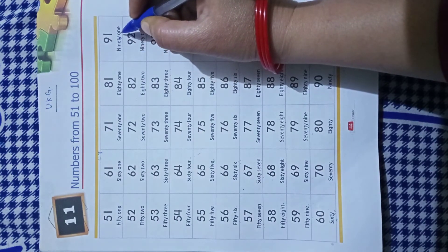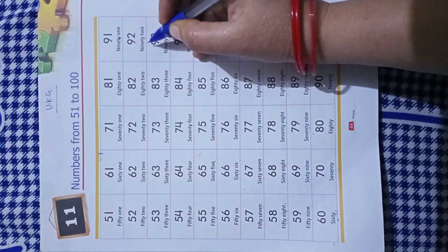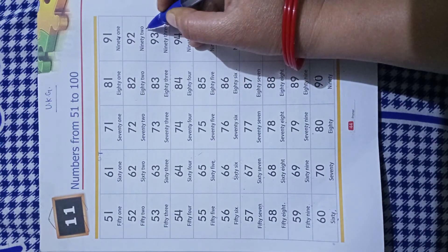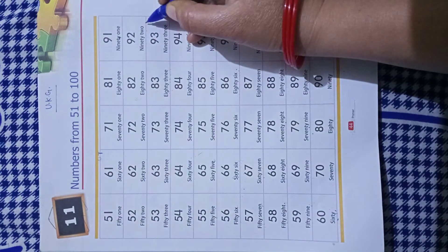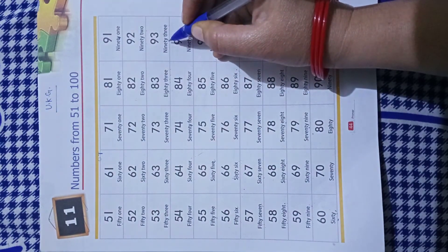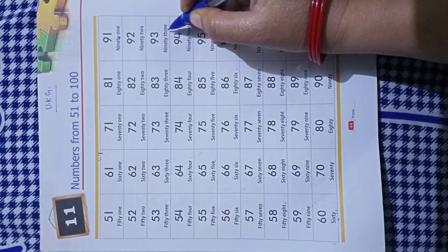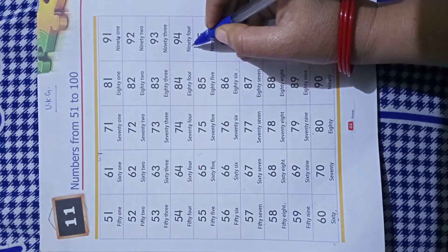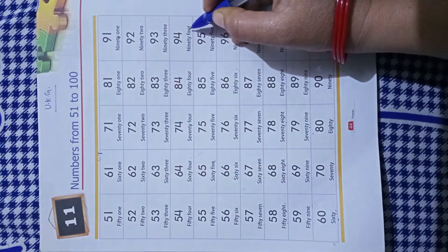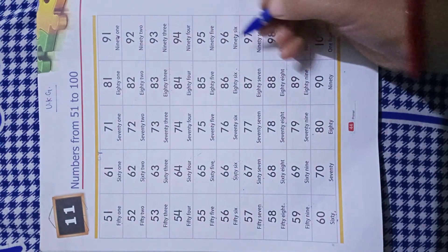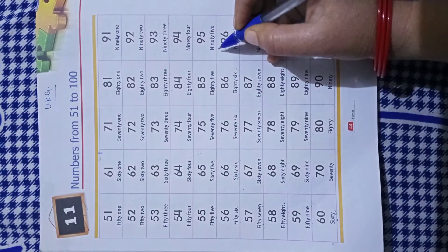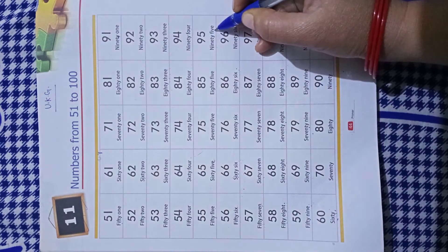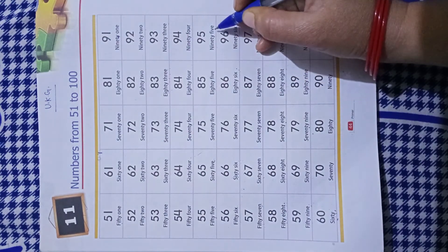NINETY-90 ONE-1-91, NINETY-90 TWO-2-92, NINETY-90 THREE-3-93, NINETY-90 FOUR-4-94, NINETY-90 FIVE-5-95.